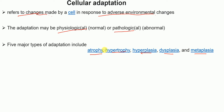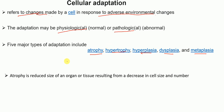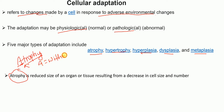First, what is atrophy? Before the definition, let's look at the word itself. Atrophy consists of two parts: 'a' and 'trophy.' In biology, 'a' means without or less, and 'trophy' refers to size. So atrophy means reduced size.